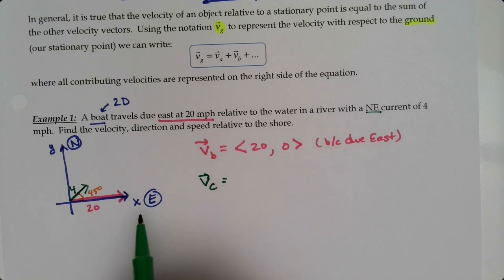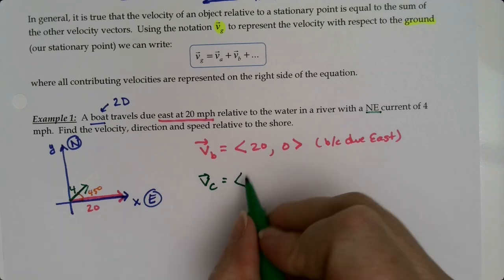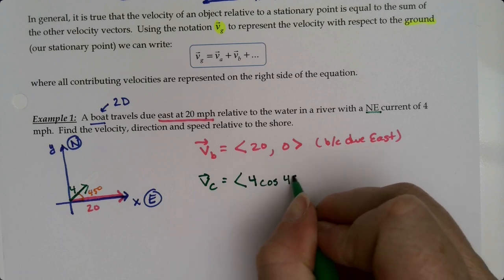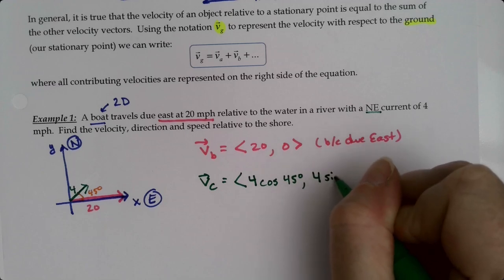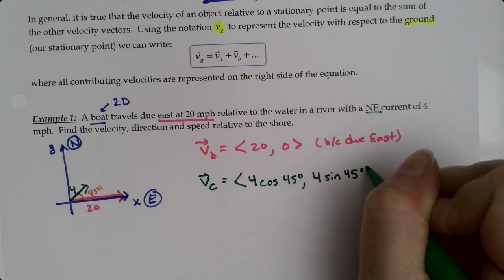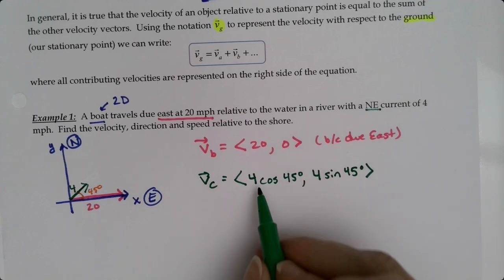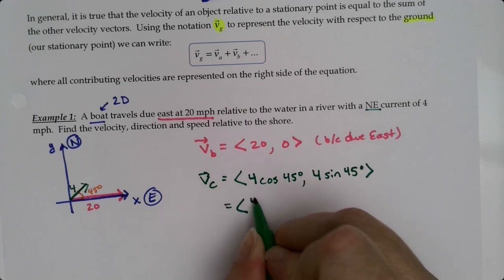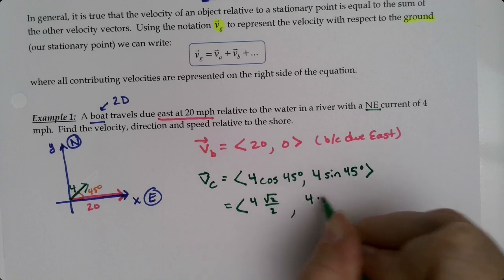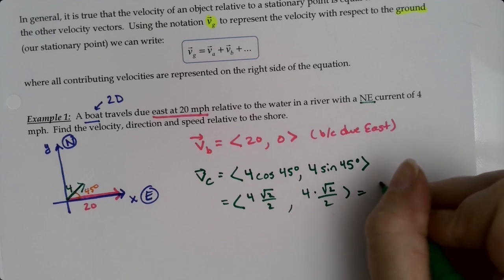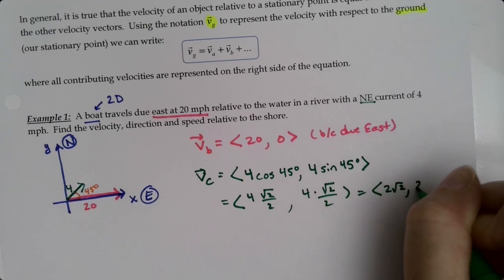The velocity for the current is the magnitude 4 times the cosine of the angle and 4 times the sine of the angle. This is 4 times the square root of 2 over 2, which makes it 2√2, 2√2.